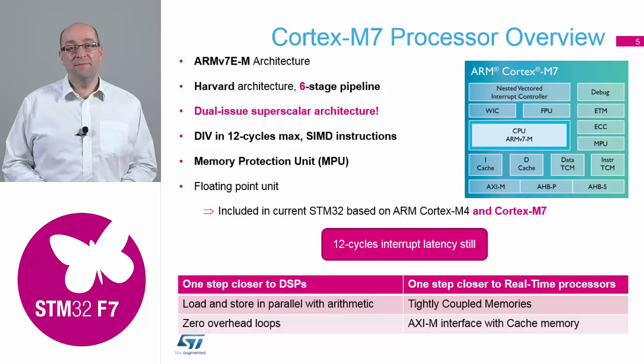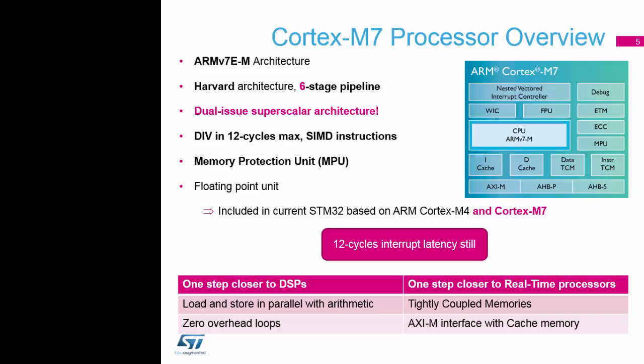There are four new things to pay attention to inside this core. Two of these new items will take us closer to a true DSP, and the other two will take us closer to a real-time processor. We're going to look at these four new items that ARM has provided to bring the performance of the Cortex-M7 up compared to the Cortex-M4.